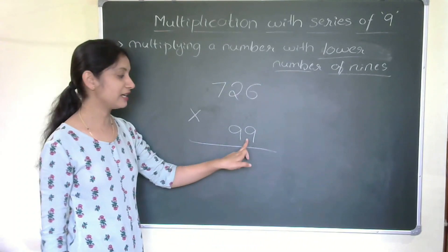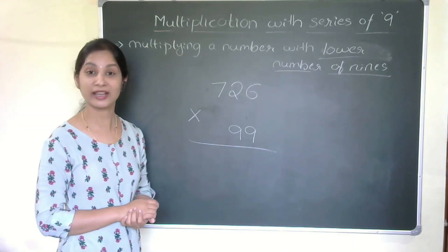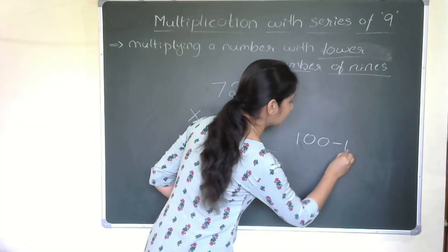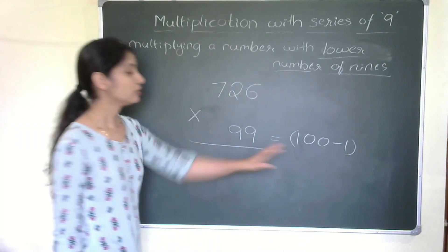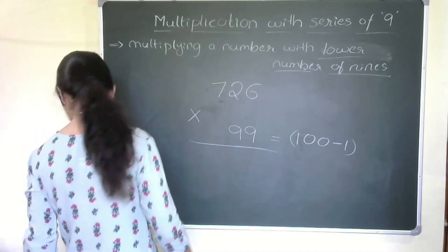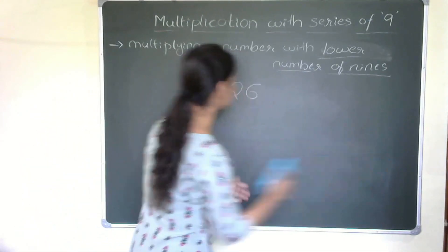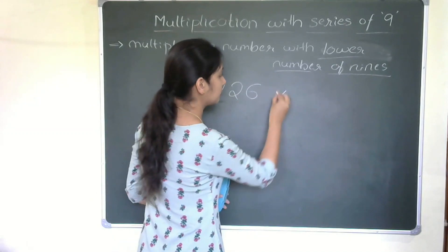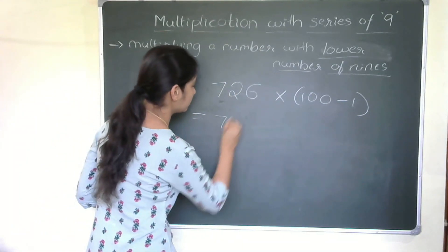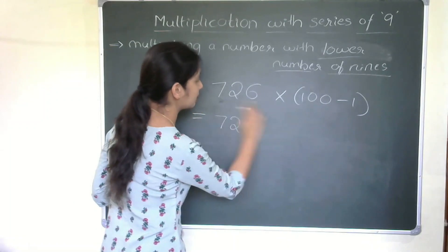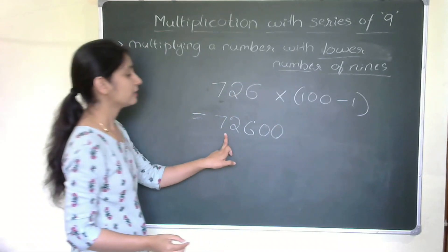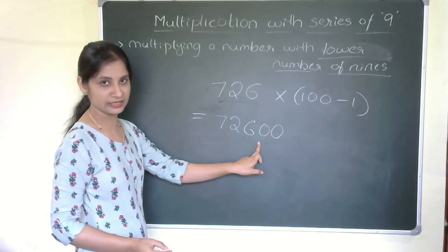Now, how about when it's not straightforward — for example 726 multiplied by 99? I can rewrite 99 as 100 minus 1. So 726 × 99 becomes 726 × (100 − 1). Multiplying 726 by 100 gives 72600. Then subtract 726 from 72600.